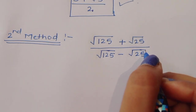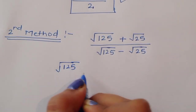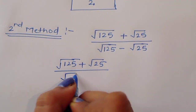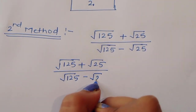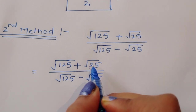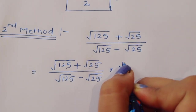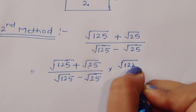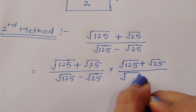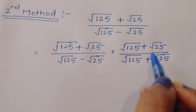We can do one thing here. We multiply the numerator and denominator by square root of 125 plus square root of 25. So we have square root of 125 plus square root of 25, times square root of 125 plus square root of 25, divided by square root of 125 minus square root of 25, times square root of 125 plus square root of 25. We are using the same term.